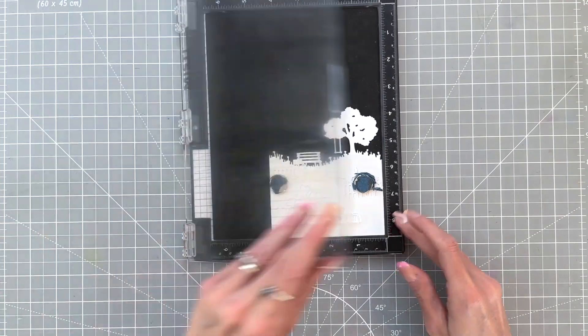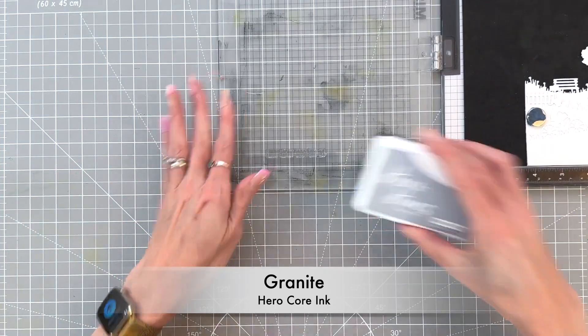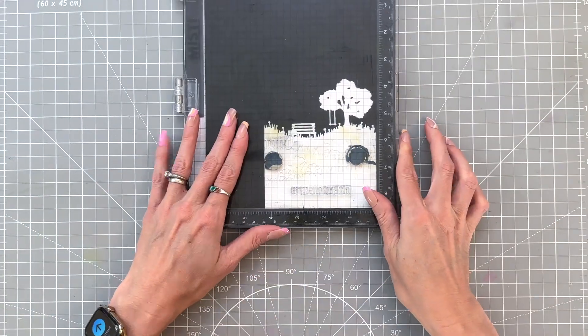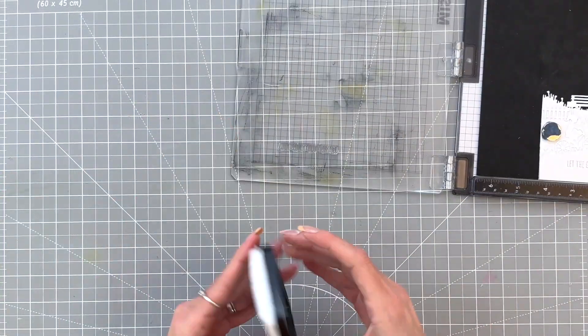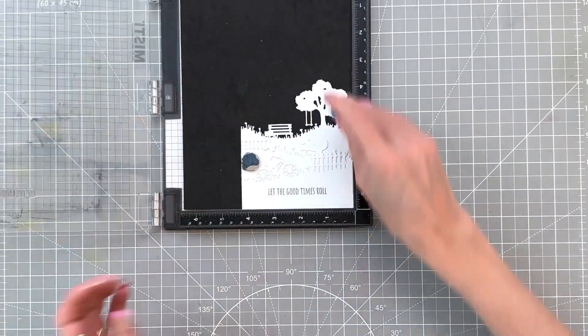I grabbed a sentiment from that clear stamp set and I'm going to stamp it in granite core ink. I love the gray color here, doing something a little bit different—typically I do black, but I really liked the softer look that the gray added. I inked it up and stamped it a couple of times to make sure it was nice and crisp.